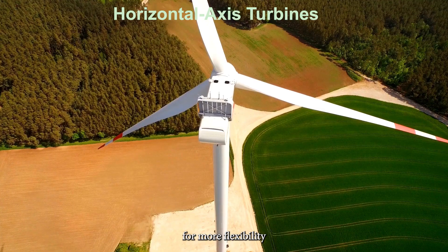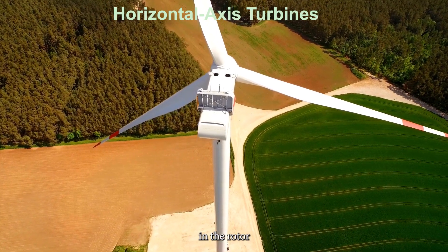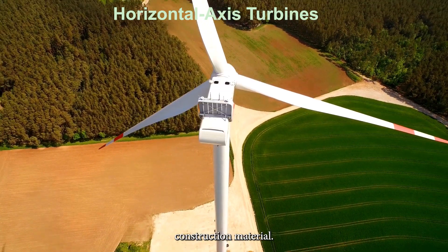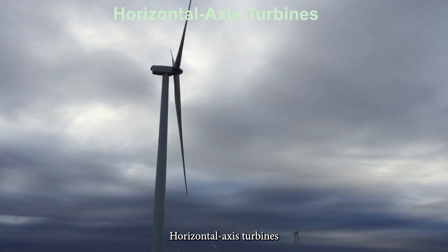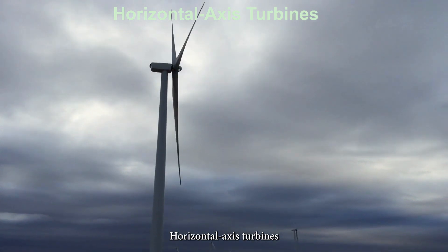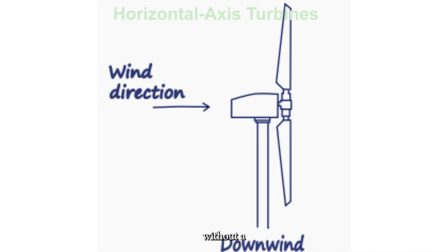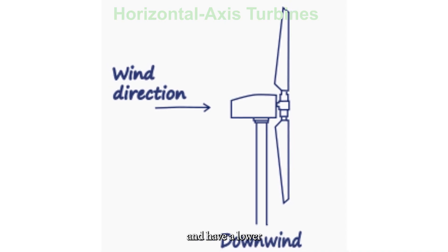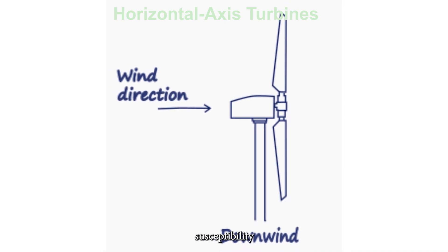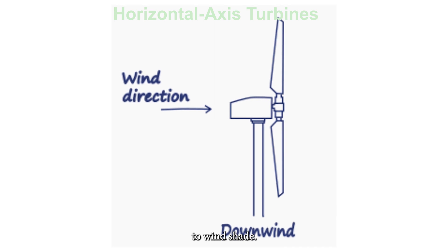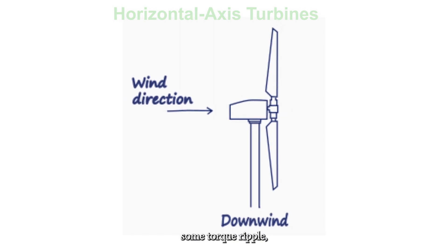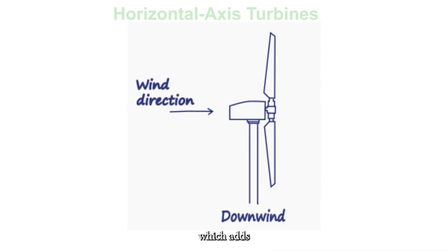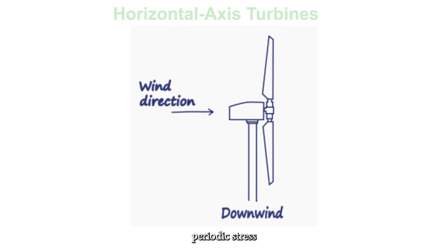This design allows for more flexibility in the rotor blades and lighter construction material. Downwind horizontal axis turbines can operate without a yawing mechanism and have a lower susceptibility to wind shade. However, they do experience some torque ripple, which adds periodic stress to the turbine structure.